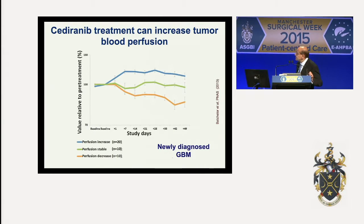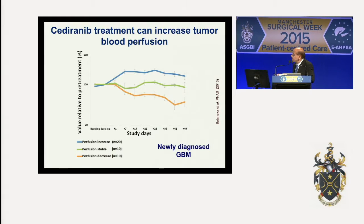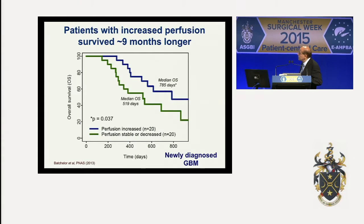The first trial I want to describe was conducted in newly diagnosed glioblastoma patients by my colleague Dr. Tracy Batchelor, chief of neuro-oncology at Mass General Hospital. In this phase 2 trial with 40 patients, after receiving cediranib — an anti-VEGF receptor tyrosine kinase inhibitor — perfusion actually went up in 20 patients, remained stationary in 10, and went down in 10. If you believed the prevailing hypothesis, patients with decreased perfusion — starved tumors — would live longer. But instead, the patients whose perfusion went up had an overall survival about nine months greater than patients where perfusion remained the same or went down.